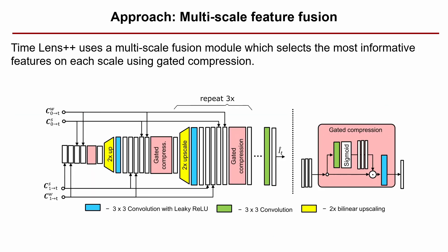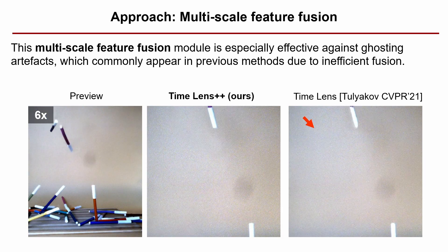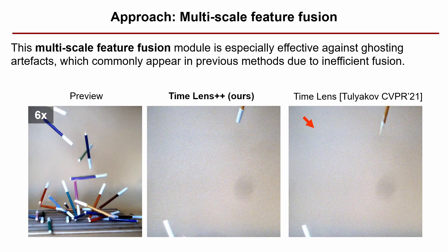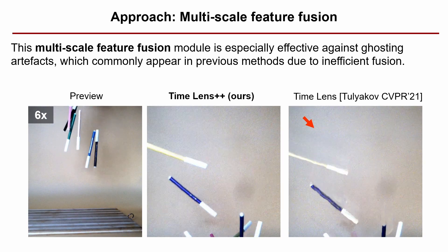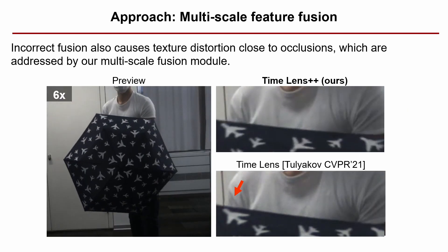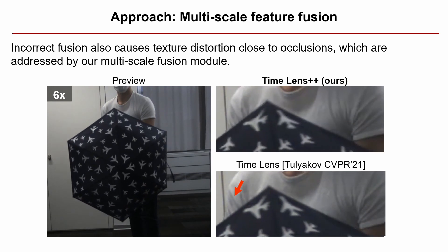Secondly, Timelence++ uses a multi-scale feature fusion module, which selects the most informative features on each scale using gated compression. This multi-scale feature fusion module is especially effective against ghosting artifacts, which commonly appear in previous methods due to inefficient keyframe fusion. Incorrect fusion also causes texture distortion close to occlusions, which are addressed by our multi-scale feature fusion module.